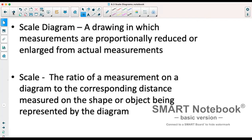Now our scale is the ratio of a measurement on a diagram to a corresponding distance measured on a shape or object being represented by a diagram. So for example, we might have for our scale one centimeter on our diagram is two meters in real life.